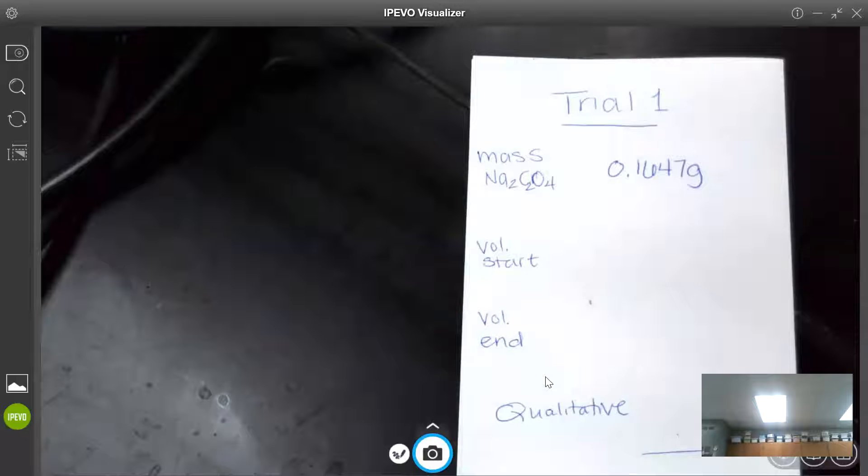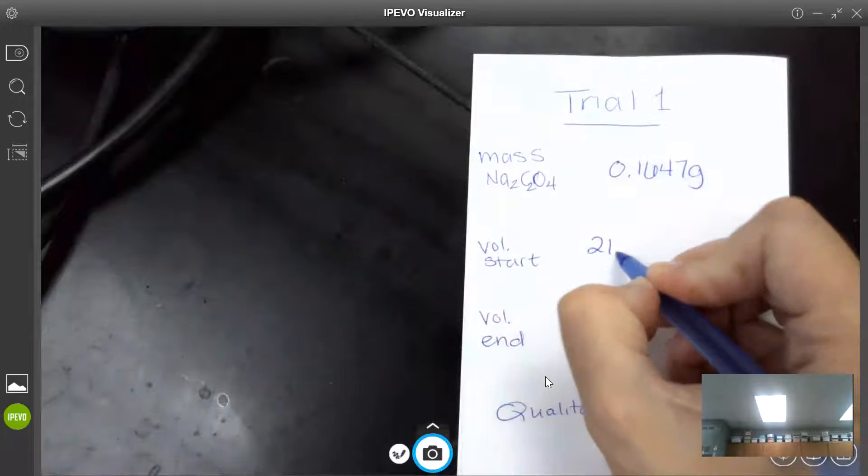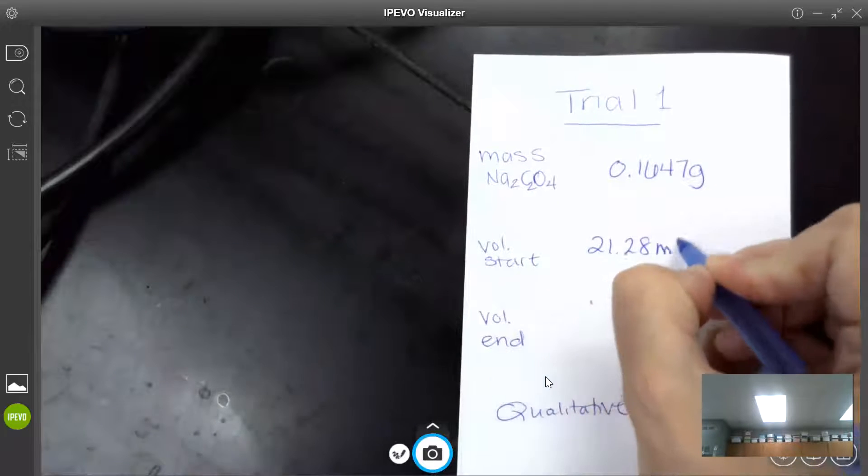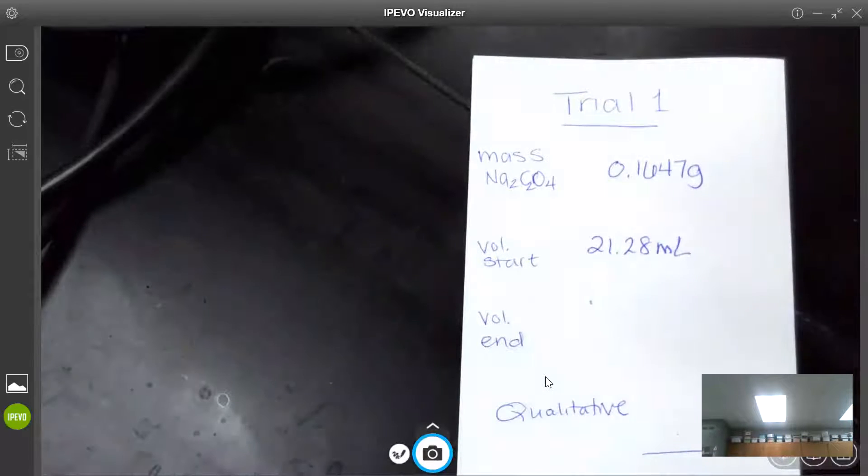So I'm going to stand on a step stool and I'm going to record the meniscus, the volume using the meniscus. So I'm going to say we're starting at 21.28 milliliters. That's my starting volume.